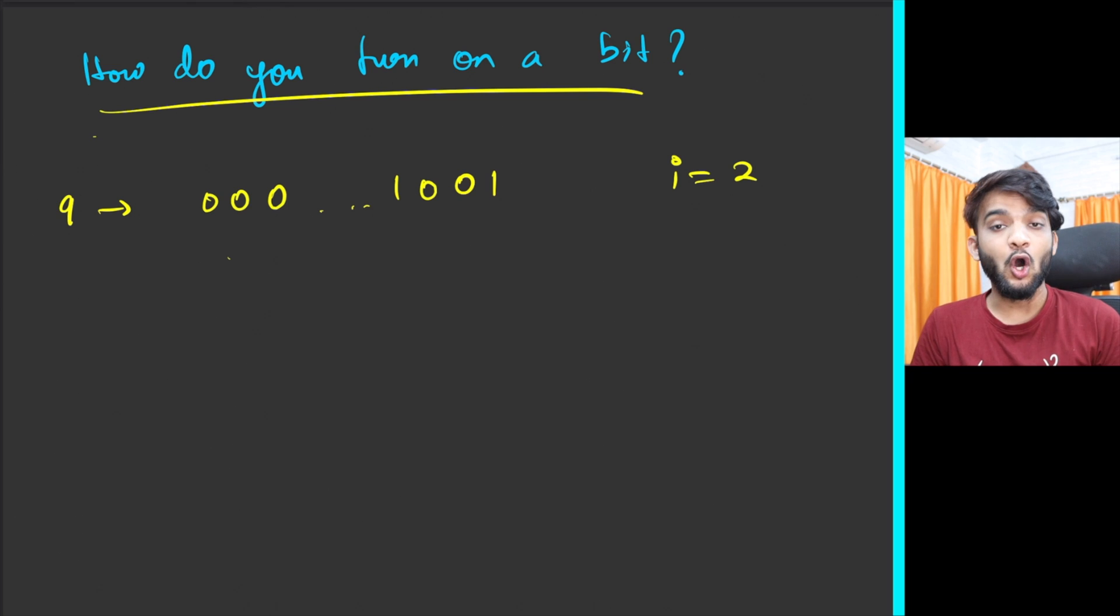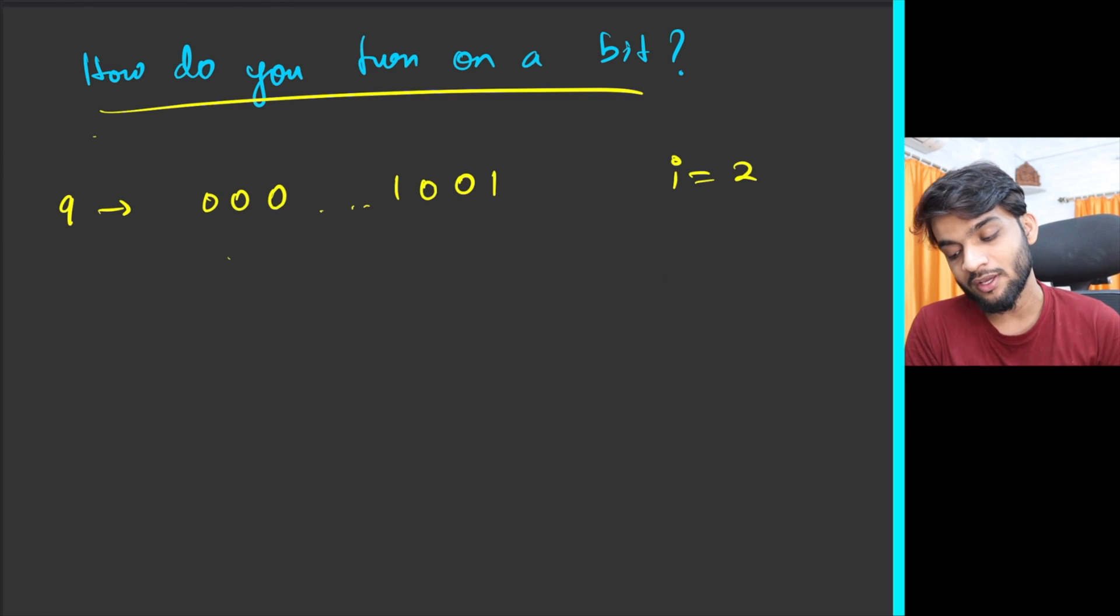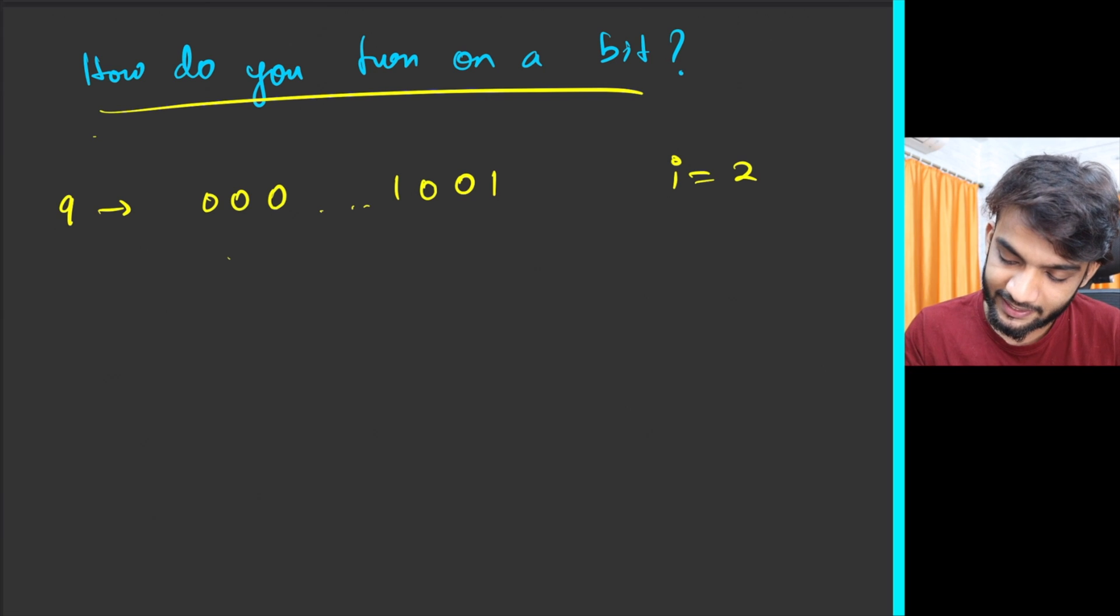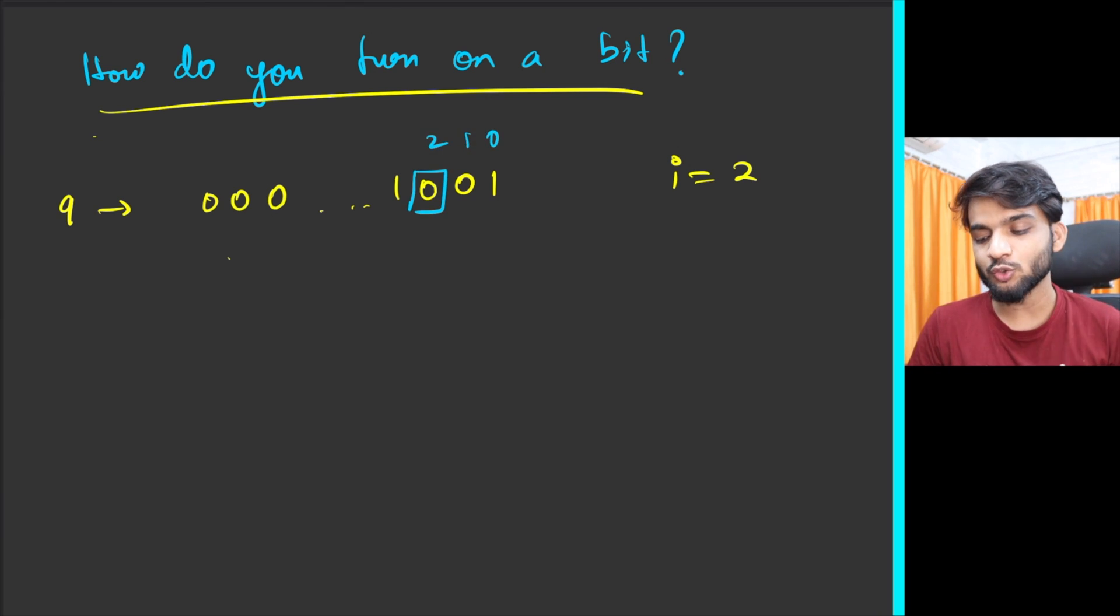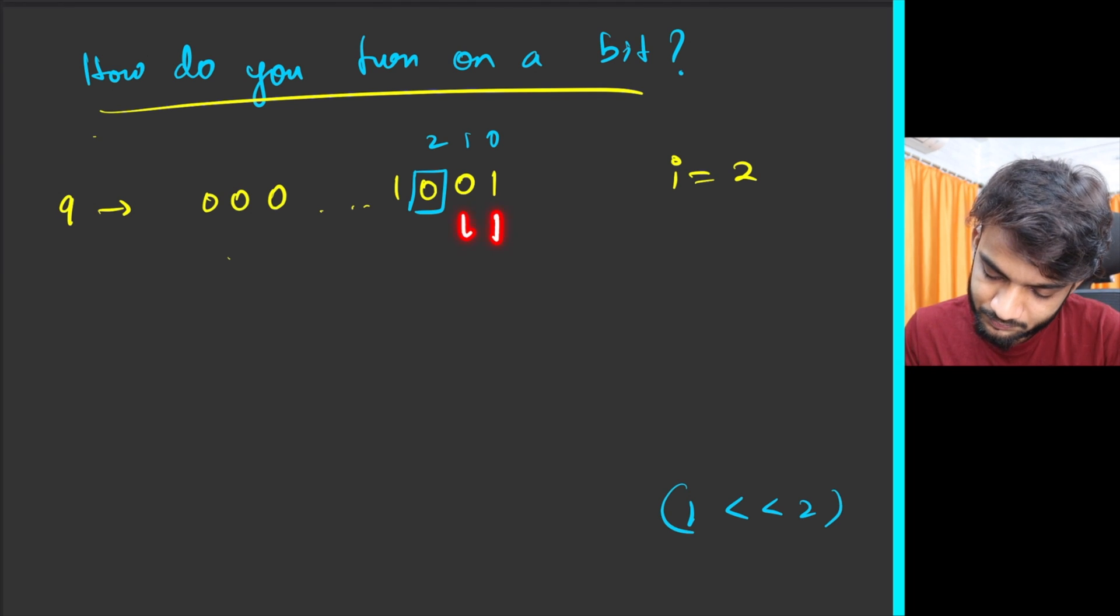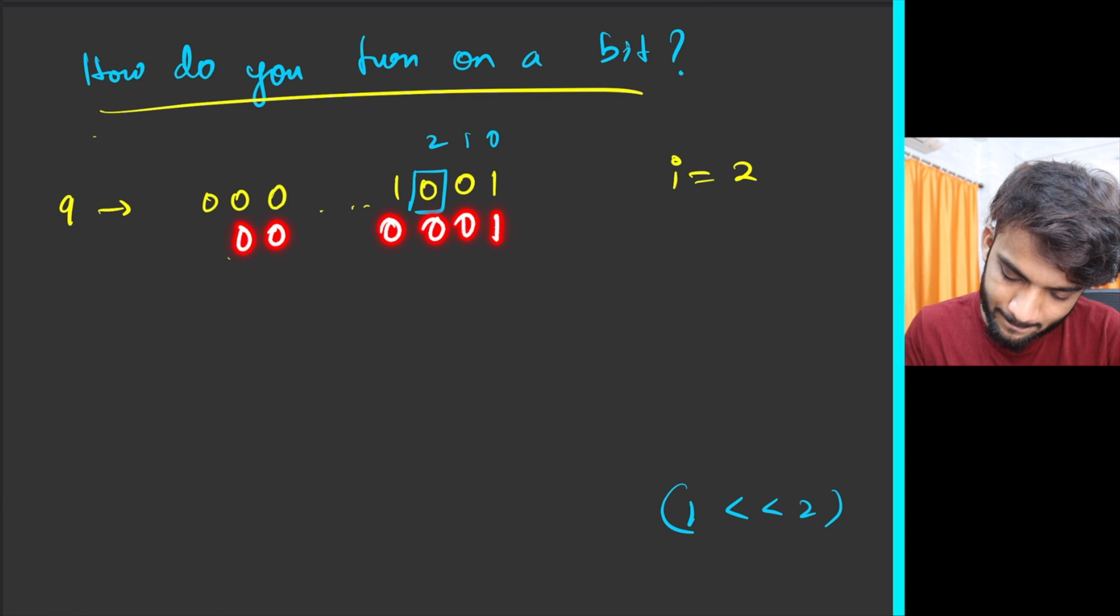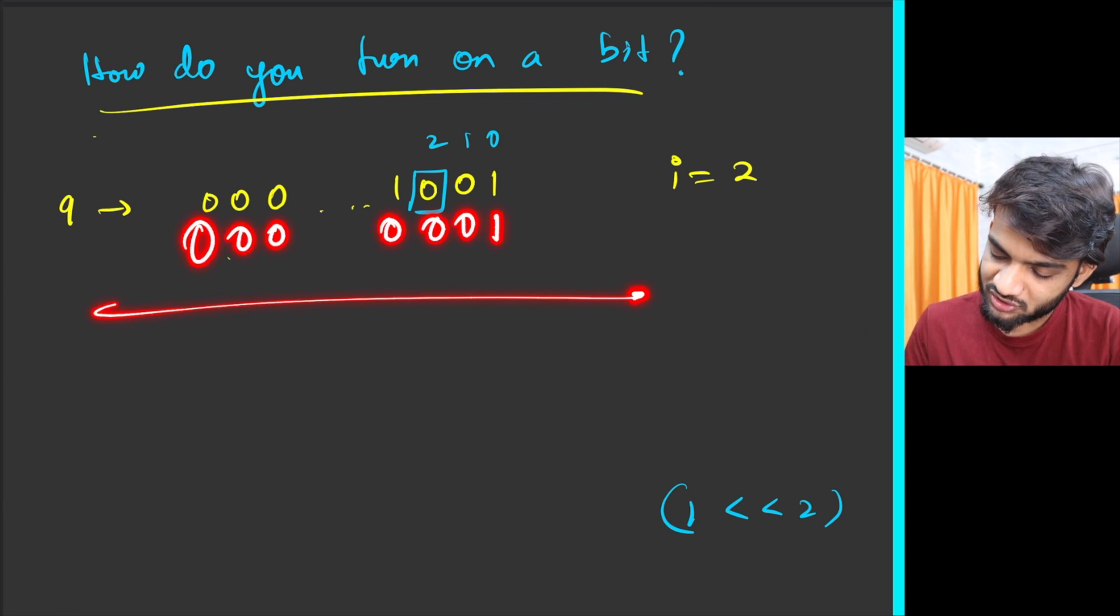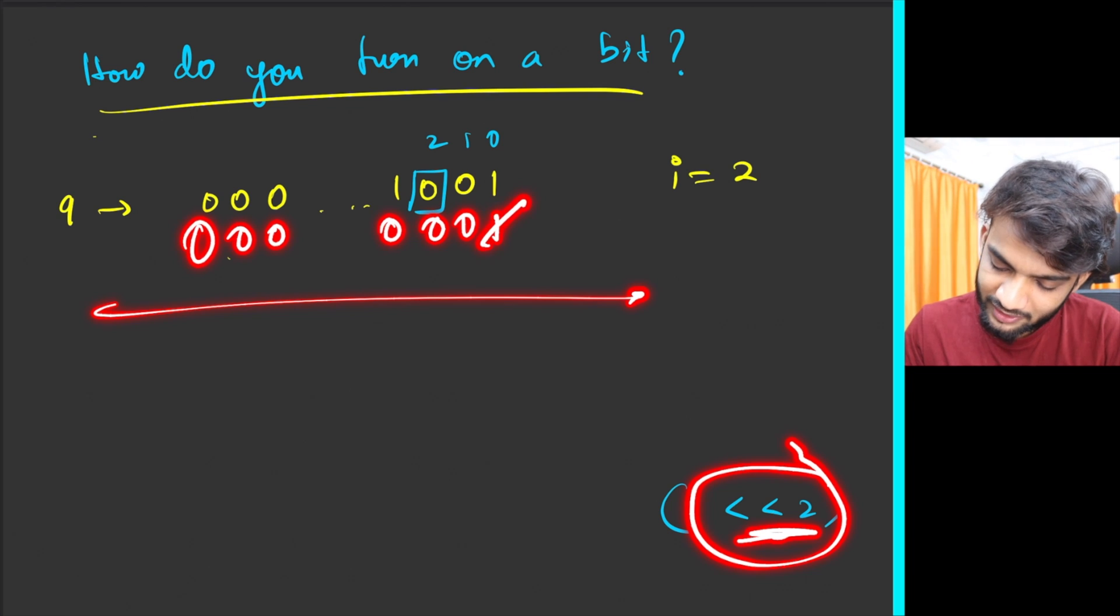Assume I give you a number like nine. Nine is 000...1001. Over here, I've been given the index as two and what they're asking me is to turn on the second most bit from the right. This is the second most bit. If I just mark it 0, 1, 2, I've been asked to turn on this bit. In order to turn on this bit, it's very simple. You write one left shift of two.